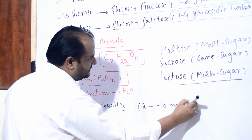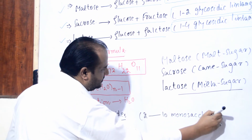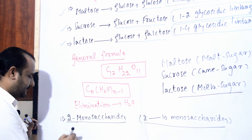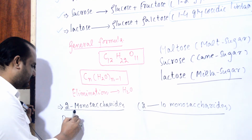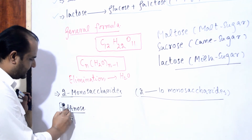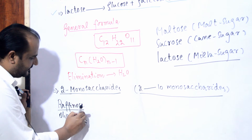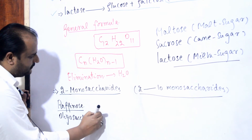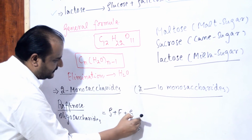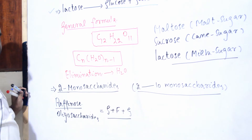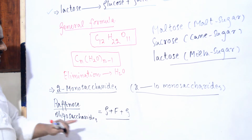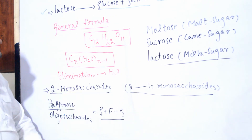Disaccharides contain two monosaccharides. In oligosaccharides, the number goes up to ten monosaccharide units. An example of oligosaccharides is raffinose, which contains one glucose, one fructose, and one galactose - yani aap yahaan pe dekhen kitne monosaccharides ho gaye, kitne subunits ho gaye: 3. Isi tarah aage 10 tak chale jaenge.